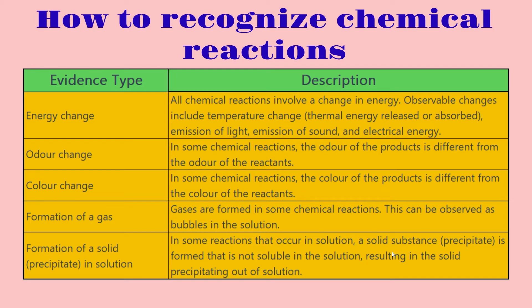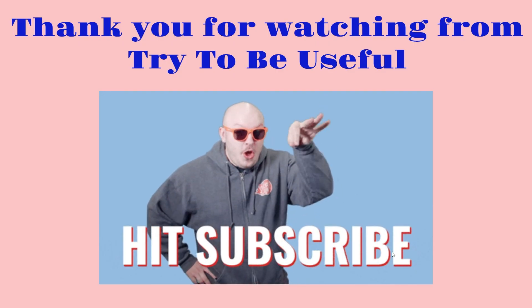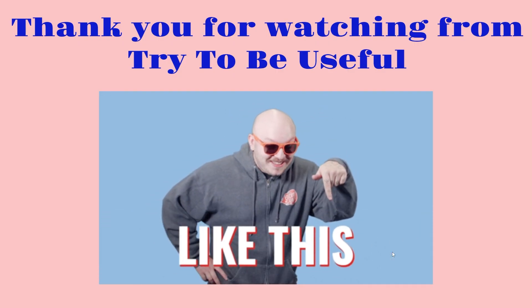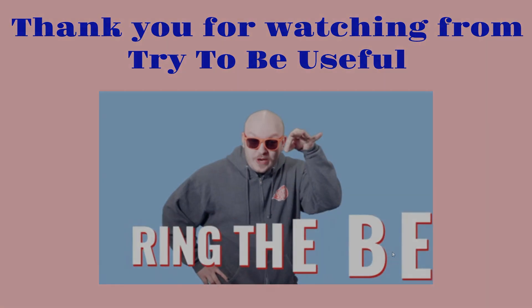Finally, the fifth type of evidence is the formation of a solid, otherwise known as a precipitate. In some reactions that occur in solution, a solid substance — the precipitate — is formed that is not soluble in the solution, resulting in the solid precipitating out. These are the different evidence types you can use to recognize a chemical reaction, and that summarizes everything for this video. Thank you so much for watching from Try to Be Useful, and we'll see you in our next chemistry video.